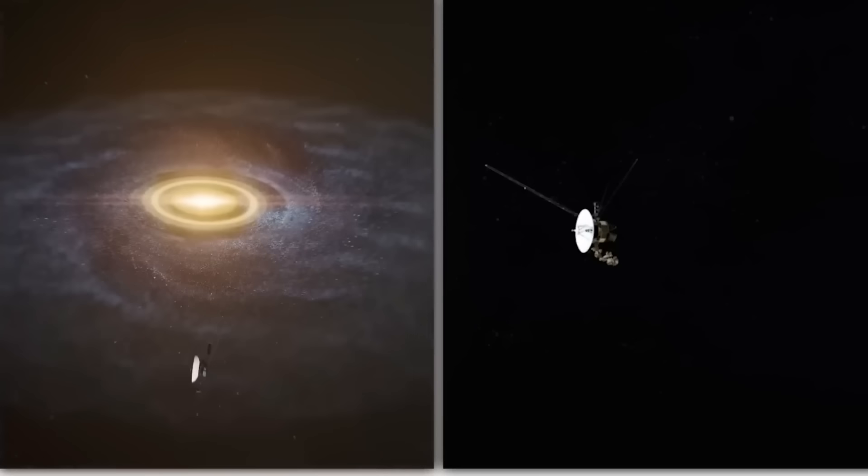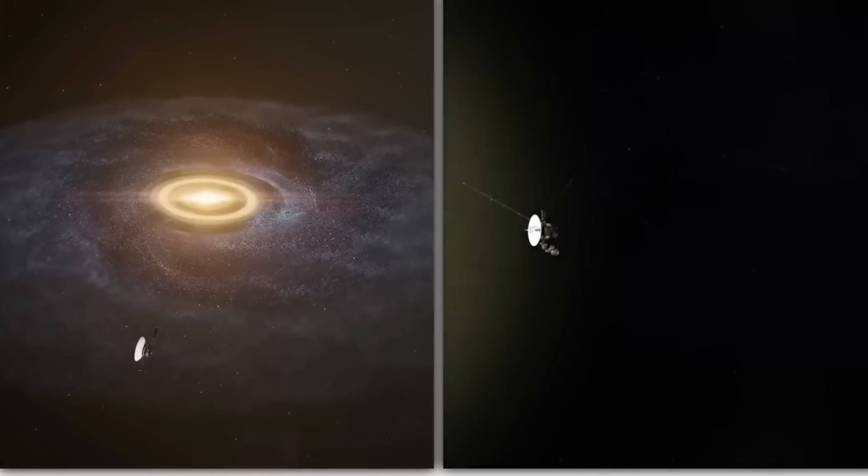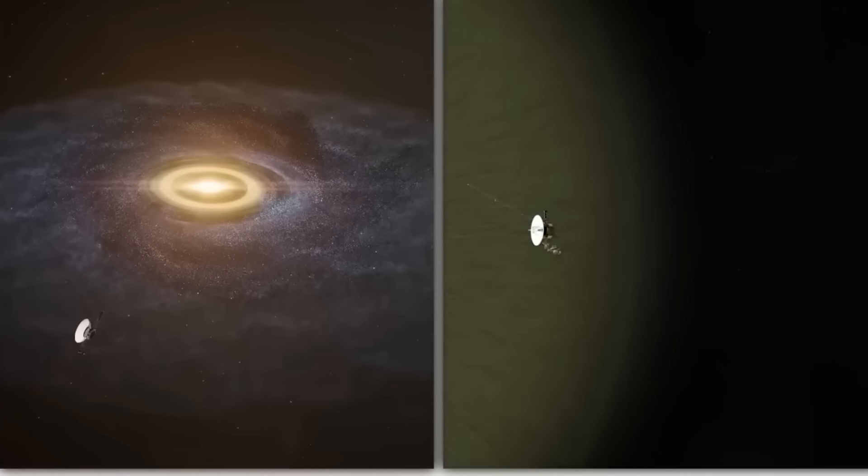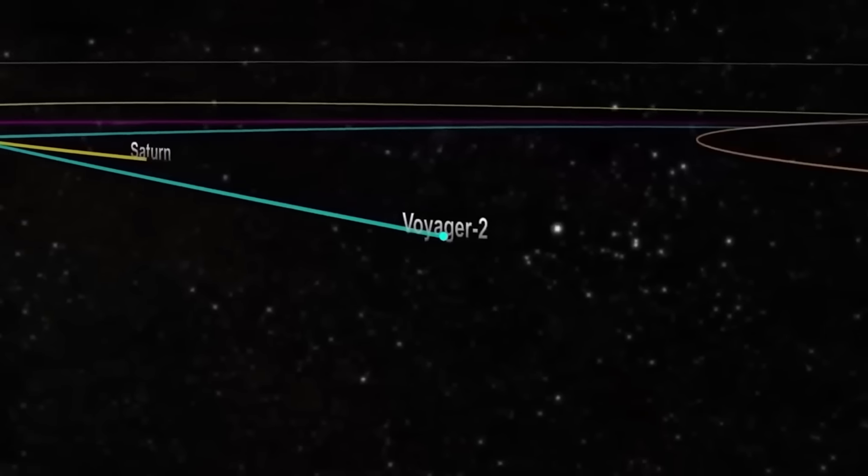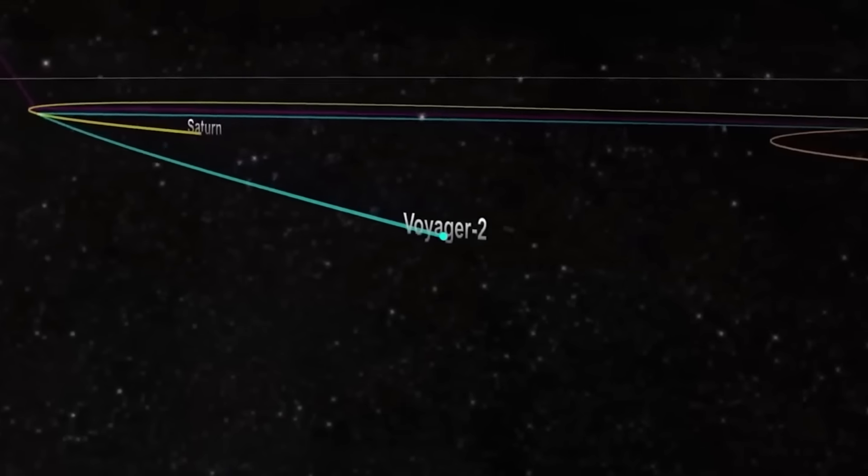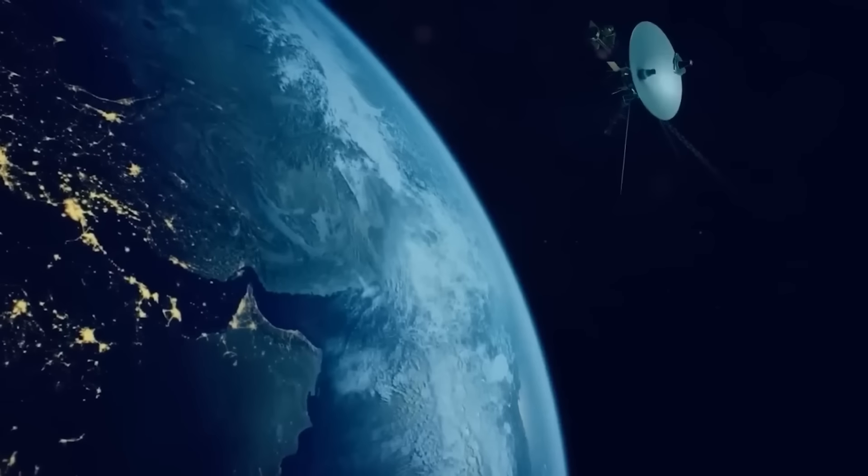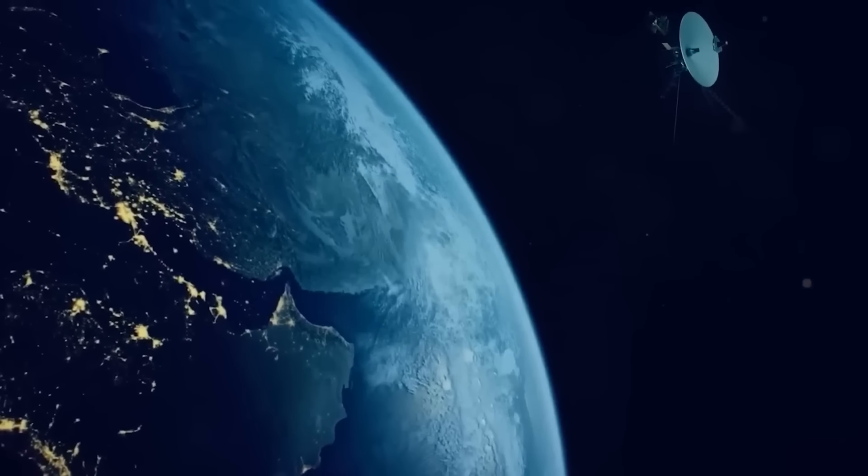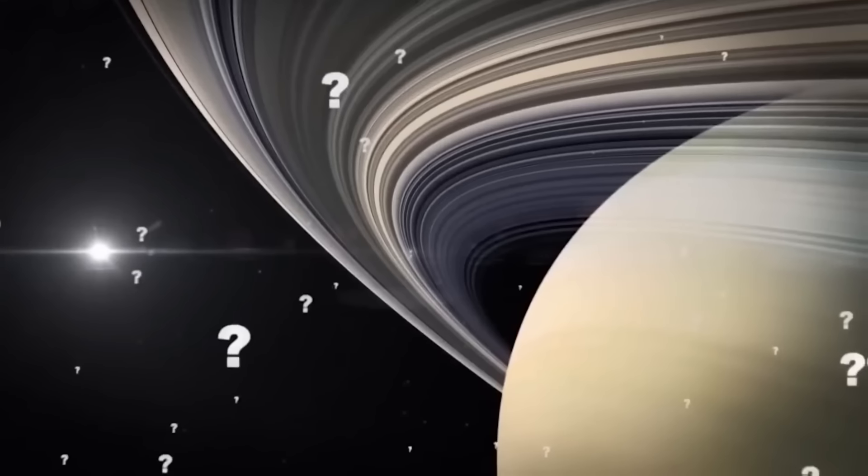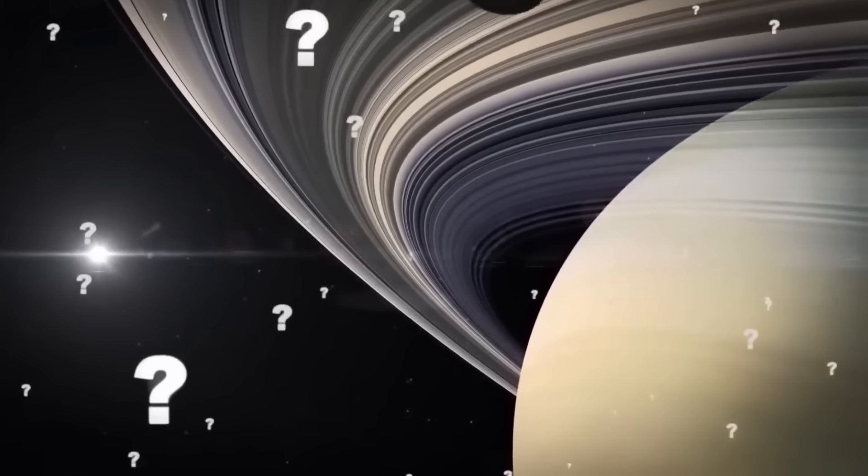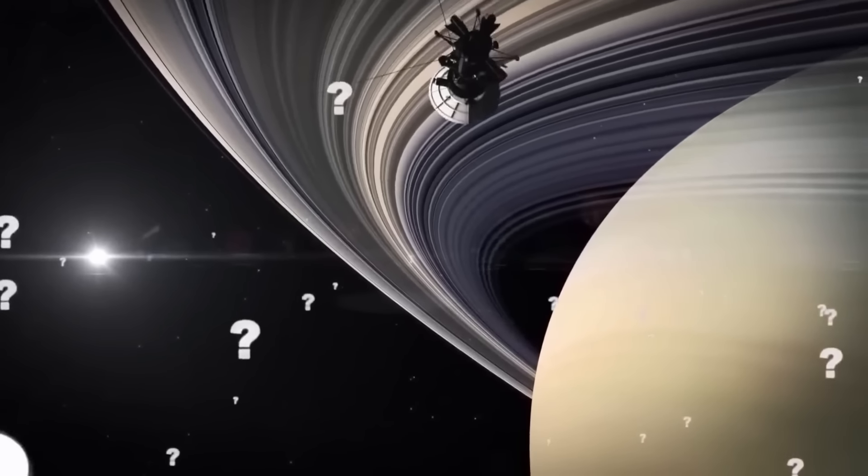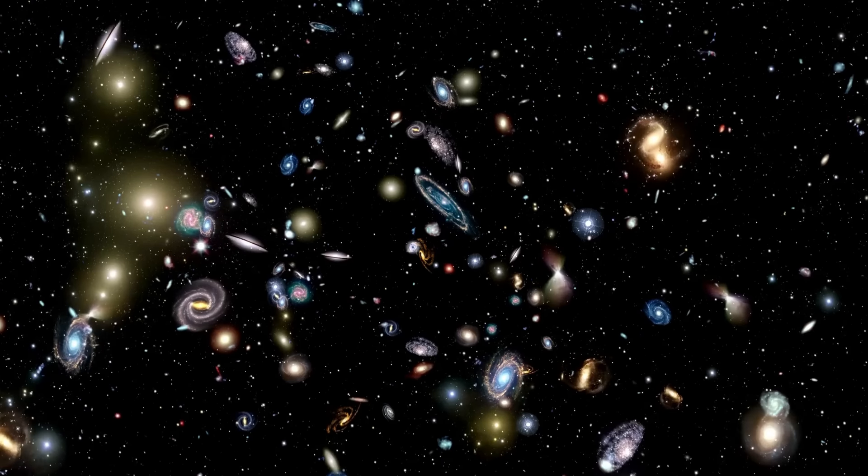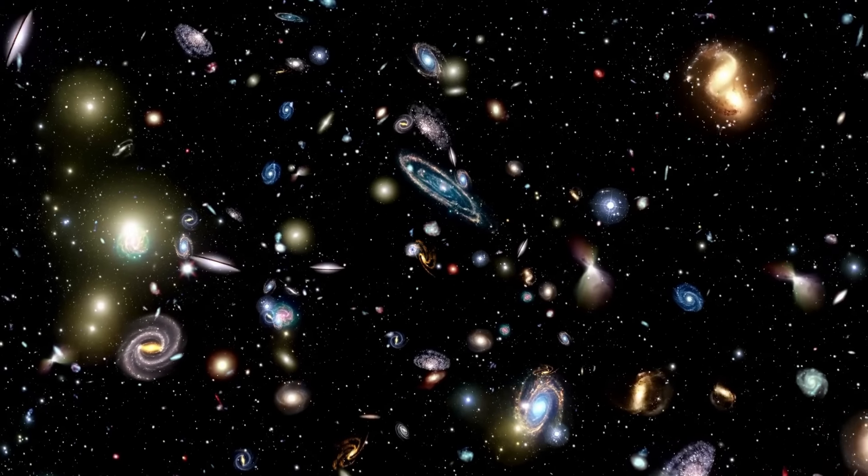The two spacecraft parted ways to continue their own missions after obtaining data at Saturn. While Voyager 2 continued toward the final two planets in our solar system, Voyager 1 made a detour and traveled toward the heliosphere.